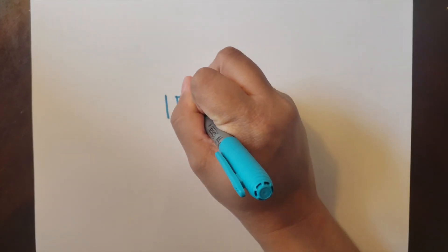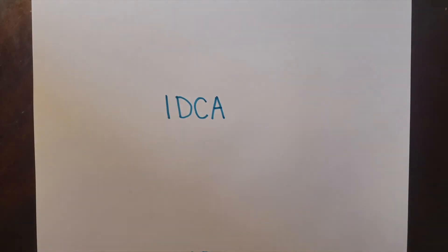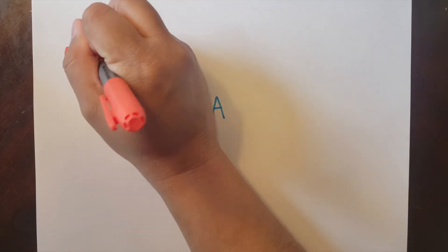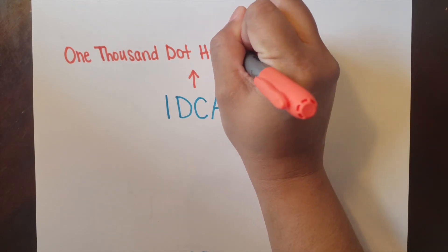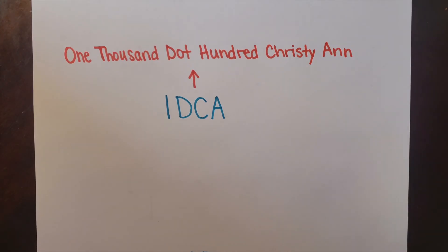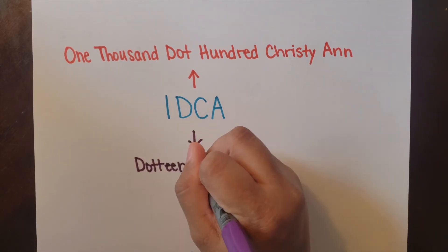So let's look at one example a little bit more specifically. Here we have 1-D-C-A. You could really pronounce this two ways. You could call it 1000, Dot-Hundred, Christy-Ann, or another way to name it is just to break it up into two pieces at a time. We could call it Dot-Teen, Christy-Ann.